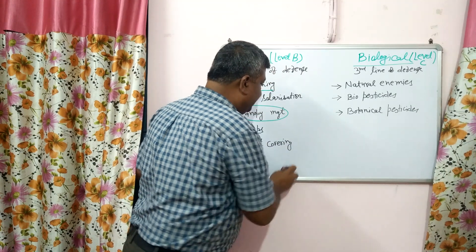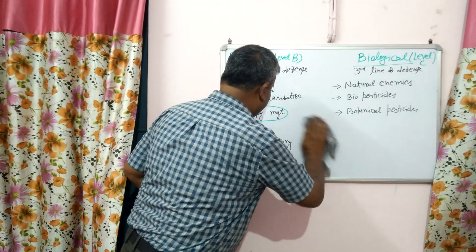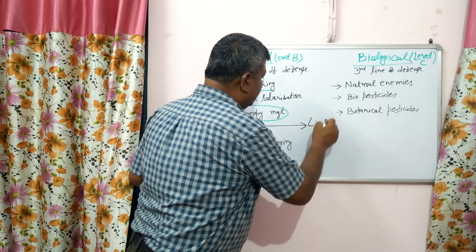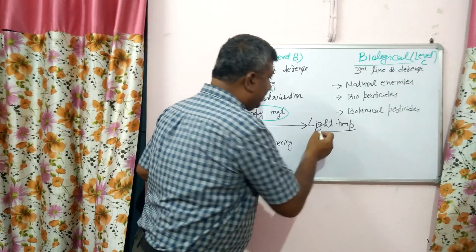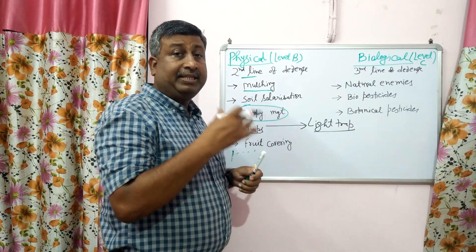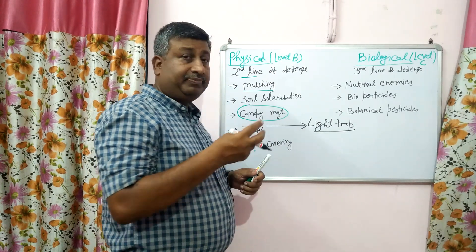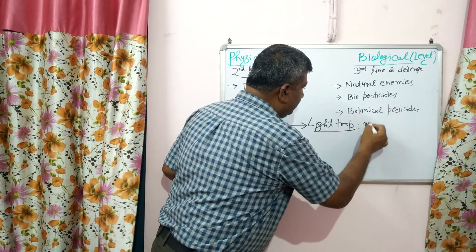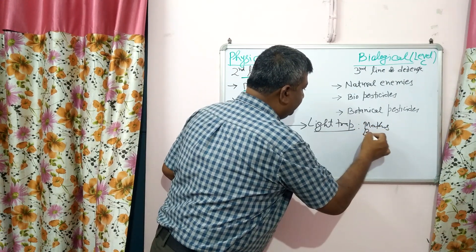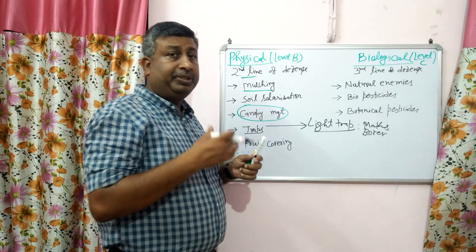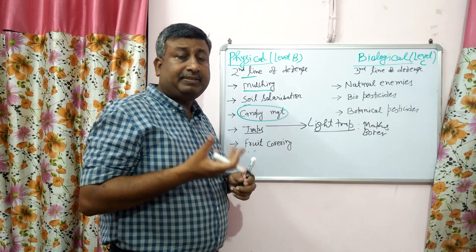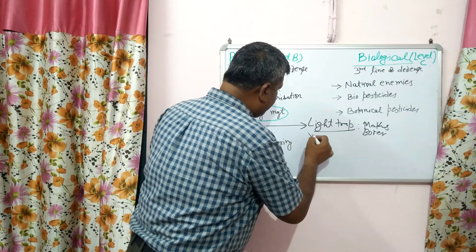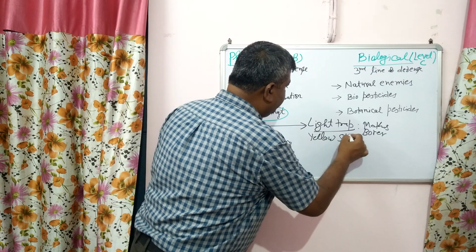Different types of traps are used for the mass collection of insects, and these traps are especially designed for specific insects. Light traps attract insects towards light at night. Moths and stem borers are attracted towards light traps in the night, so these insects can be trapped before their egg laying, thereby reducing their further population.